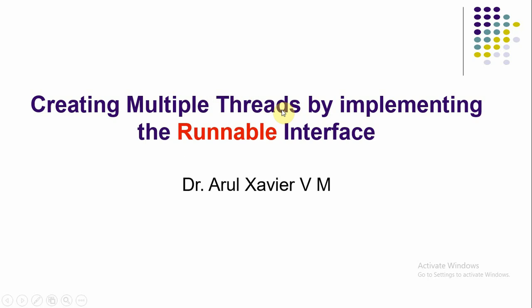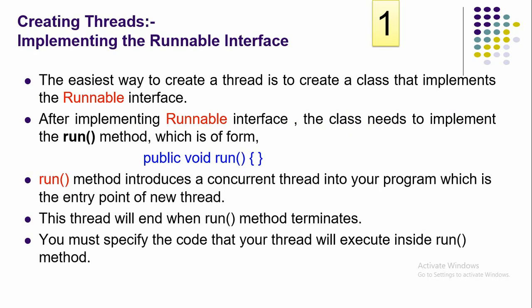In this video I'll be talking about how to create multiple threads by implementing the Runnable interface in Java. First, we need to understand what a thread is. A thread is a lightweight process by which we can create multitasking in one Java application. We can execute many tasks in parallel by creating multiple threads.